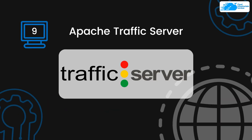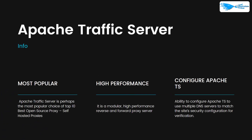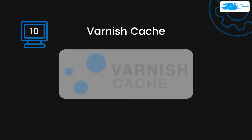At number nine we have Apache Traffic Server — make sure not to mix it with the other Traefik server, as this one is created by Apache. It has high performance and a notable feature is that it allows you to configure Apache TS, which is something you do not get with other proxy servers.